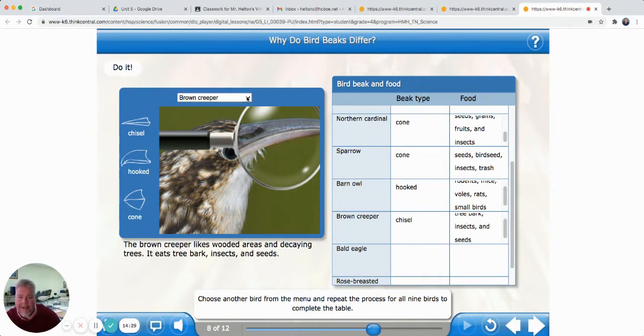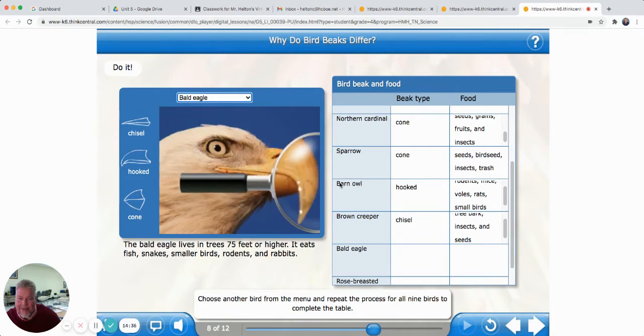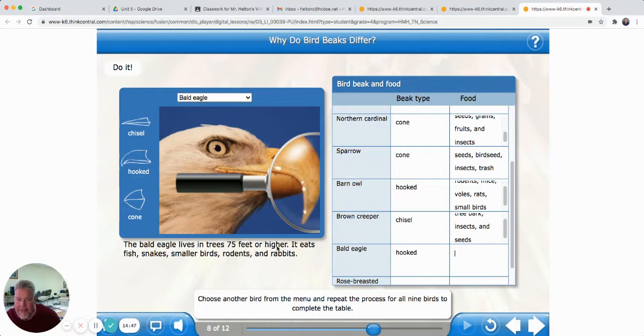Bald eagle. What do you think it's going to have? I bet it has a hooked bill. Let's see. What is that? Hooked bill. It sure does. That hook at the end there. Hooked. What have we seen that hooked billed birds eat? They eat other animals, don't they? Bald eagle lives in trees 75 feet or higher. It eats fish. Snakes. Wow. Smaller birds. Rodents. Rabbits. Poor little bunny rabbits.